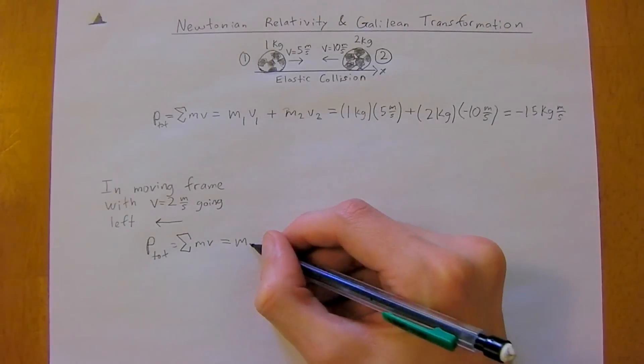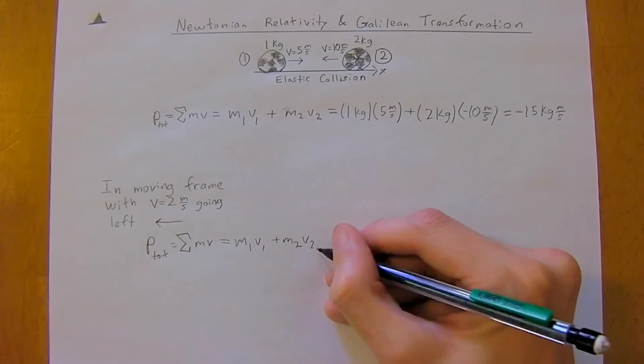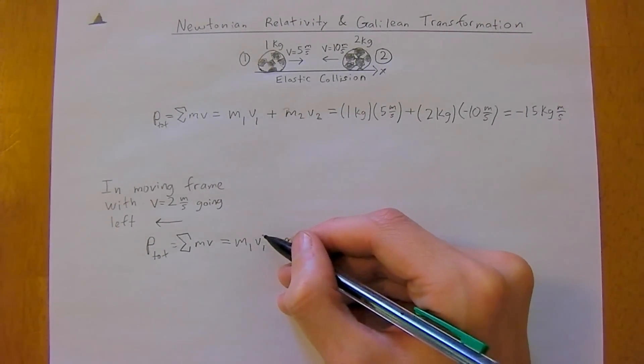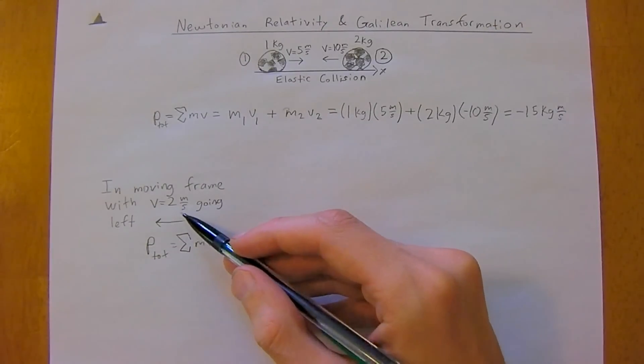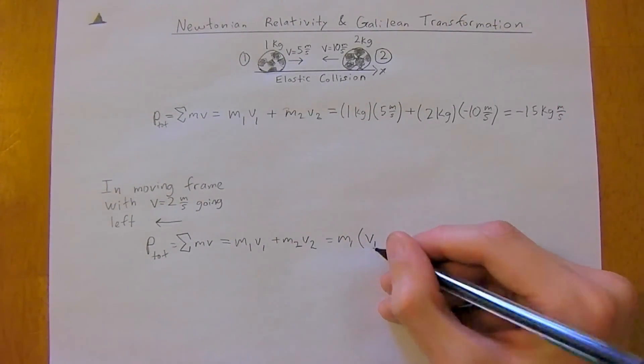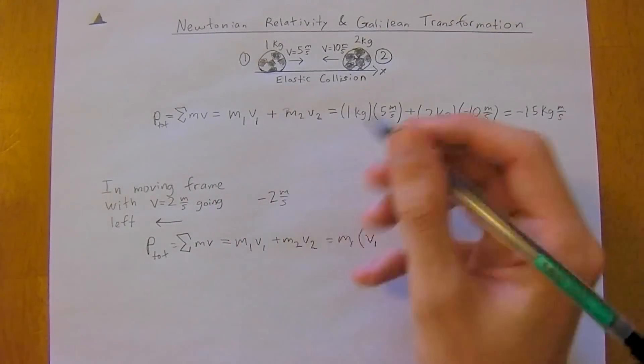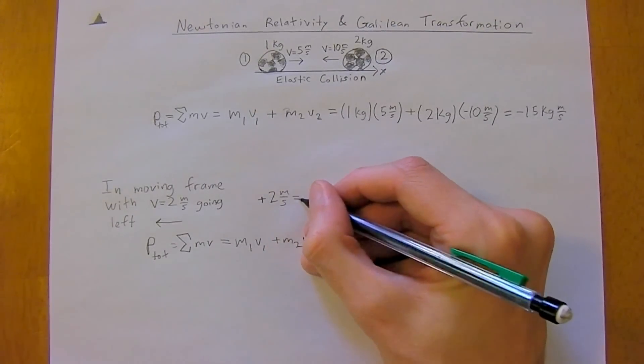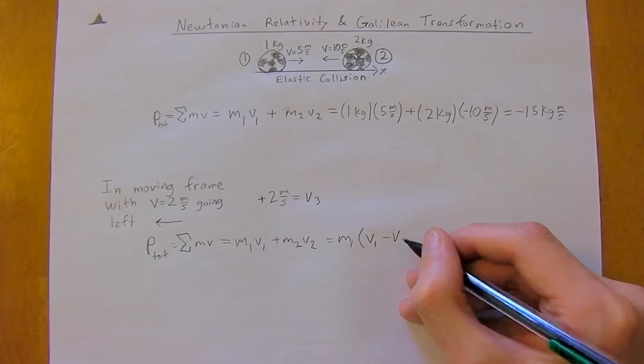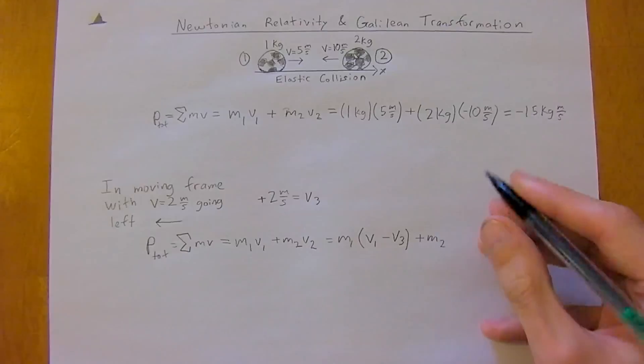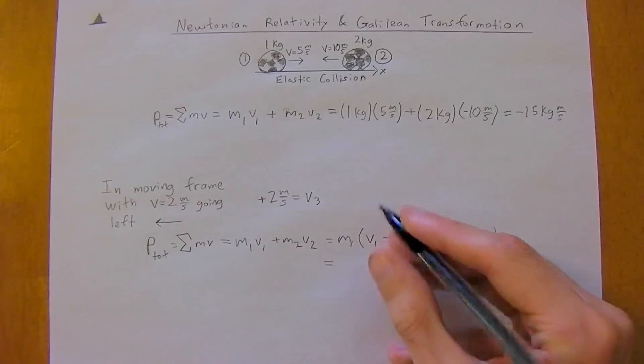And it's going to be equal to the same as above, so m1v1 + m2v2, except now the velocities are going to be different here. So we need to account for this 2 meters per second going left. So we're going to do velocity 1, we'll call negative 2 meters per second, or we'll just call it positive for now, equals v3. So it's going to be v1 minus v3 plus m2 times v2 minus v3.